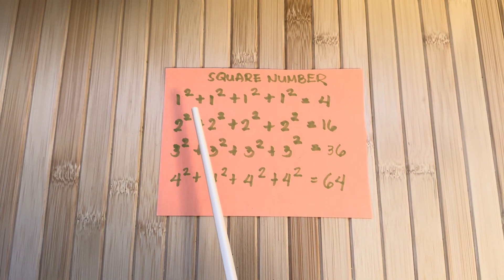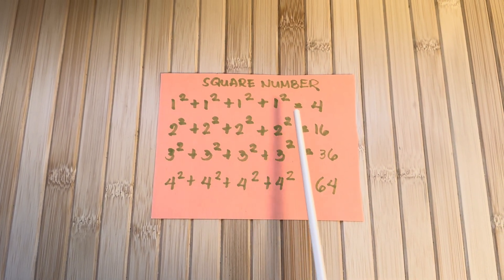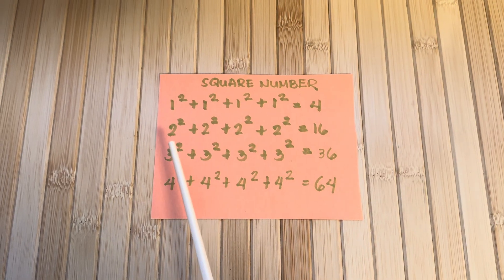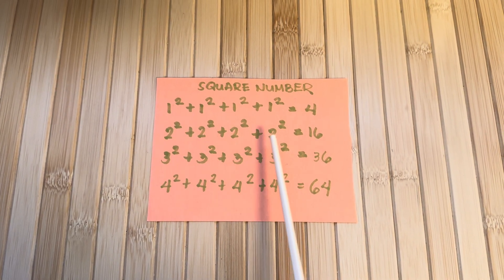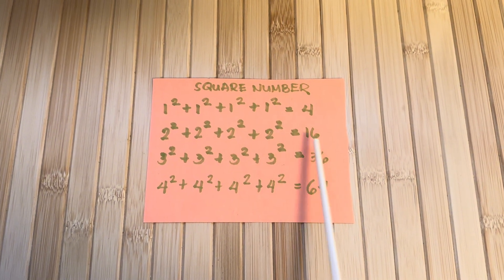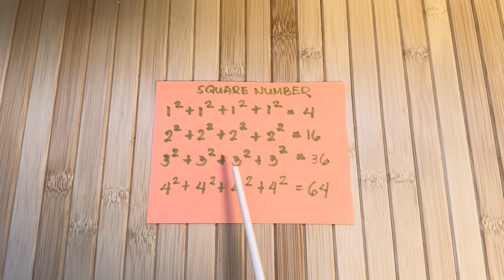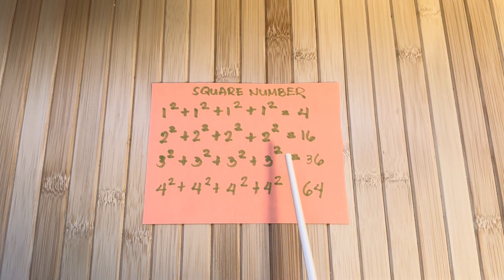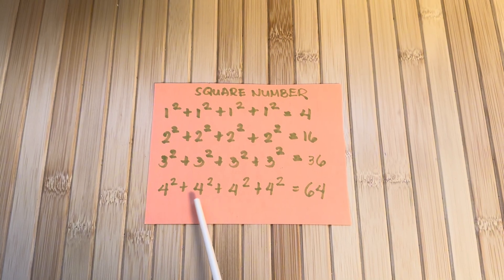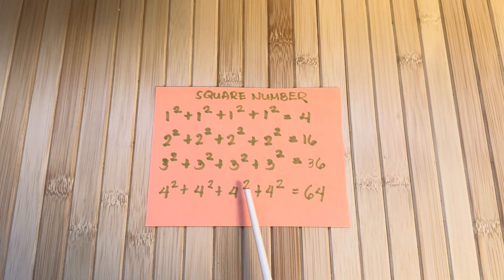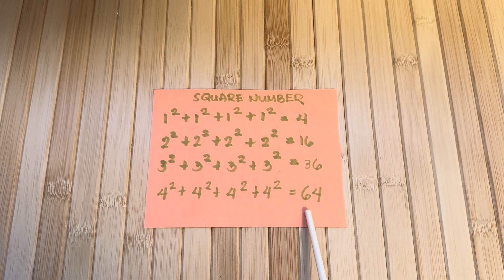1 squared plus 1 squared plus 1 squared plus 1 squared is equals to 4. 2 squared plus 2 squared plus 2 squared plus 2 squared is equals to 16. 3 squared plus 3 squared plus 3 squared plus 3 squared is equals to 36. 4 squared plus 4 squared plus 4 squared plus 4 squared is equals to 64.